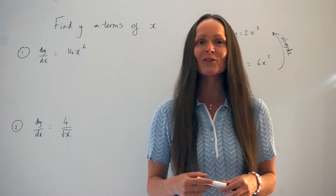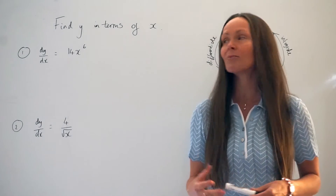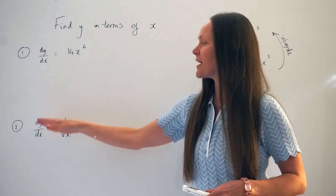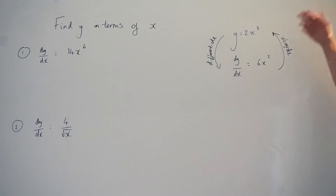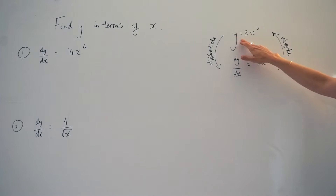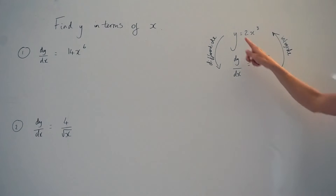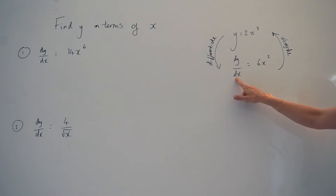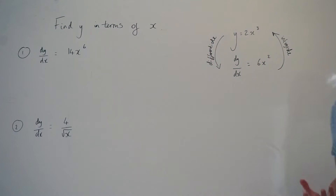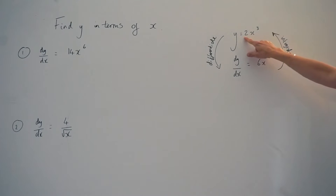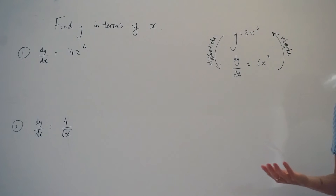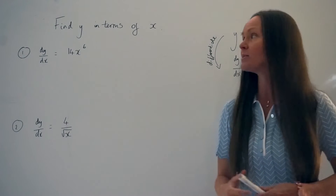Hey guys! In this video, I'm going to show you how to find y in terms of x when presented with dy by dx. Hopefully, from differentiation, you'll remember that when given an equation — for example, y equals 2x cubed — when you're differentiating this equation, you're working out dy by dx. And because integration is the reverse process of differentiation, if we want to go from dy by dx back to the equation y equals 2x cubed, we have to integrate. So that's exactly what I'm going to do here to find y in terms of x.